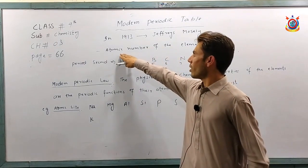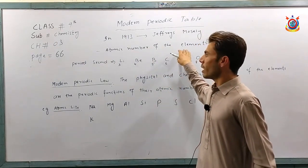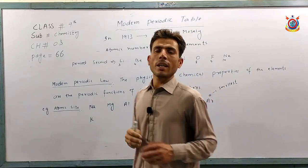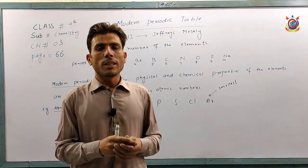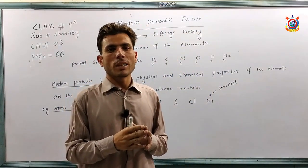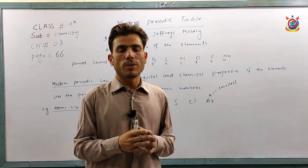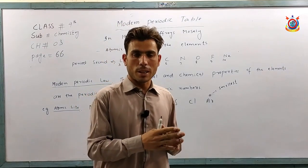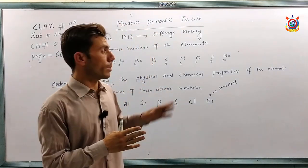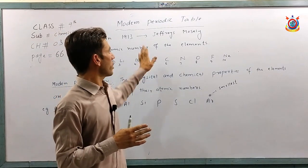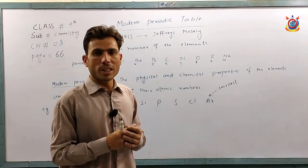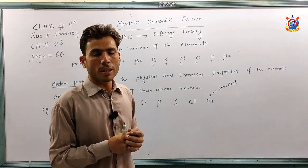Based on the atomic number of the elements, in the modern periodic table the elements are arranged on the basis of their increasing atomic numbers.